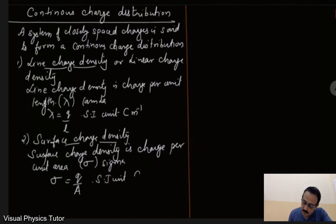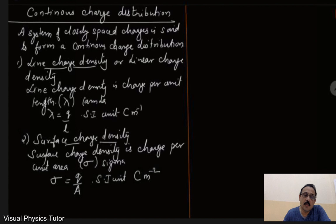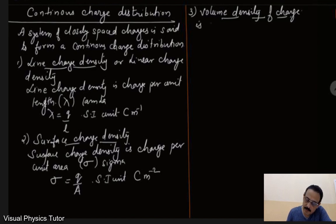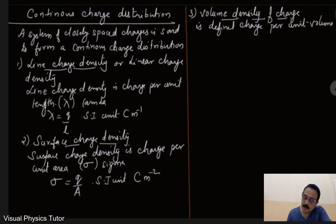The SI unit of surface charge density is coulomb per meter squared, that is C·m⁻². The third type is volume charge density, also called volume density of charge, defined as charge per unit volume.